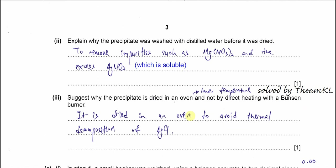Part B2: explain why the precipitate was washed with distilled water before drying. As mentioned, the silver chloride might be contaminated by magnesium nitrate and silver nitrate. So we wash the silver chloride with distilled water to remove these contaminants, because both magnesium nitrate and silver nitrate are soluble and will be washed away.